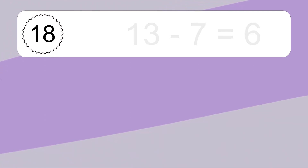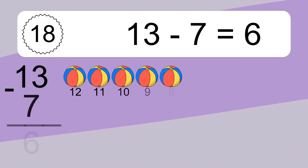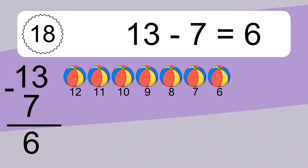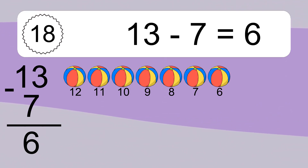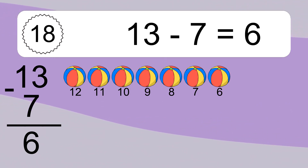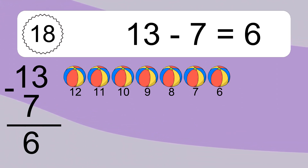13 minus 7 equals 6. Let's count it. 12, 11, 10, 9, 8, 7, 6.